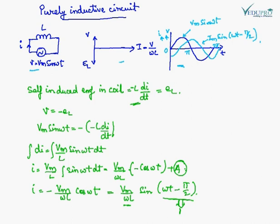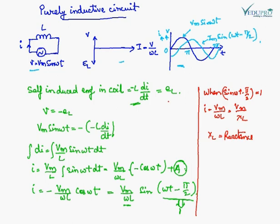The reactance offered by the inductor is XL. XL is the reactance offered by the circuit. From the expression derived, it is clear that in a purely inductive circuit, the current lags behind the voltage by pi by 2.